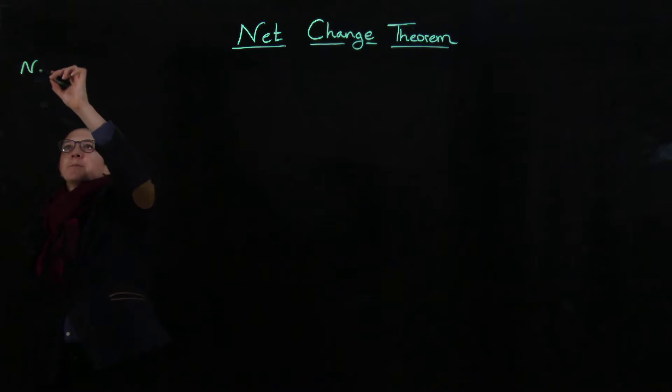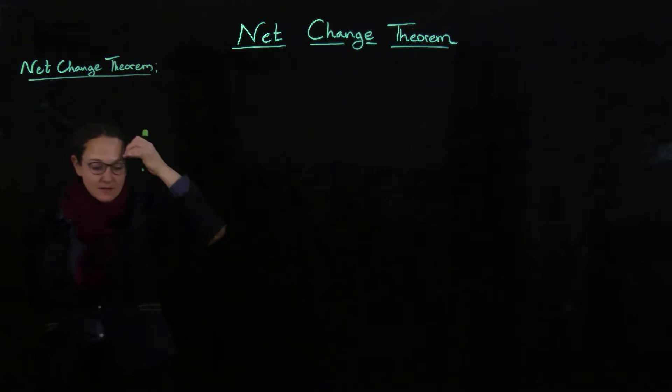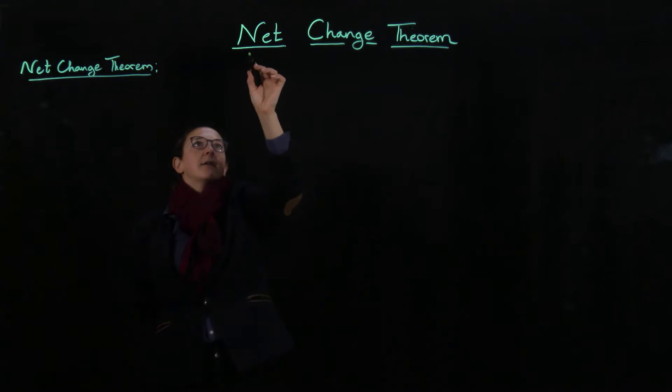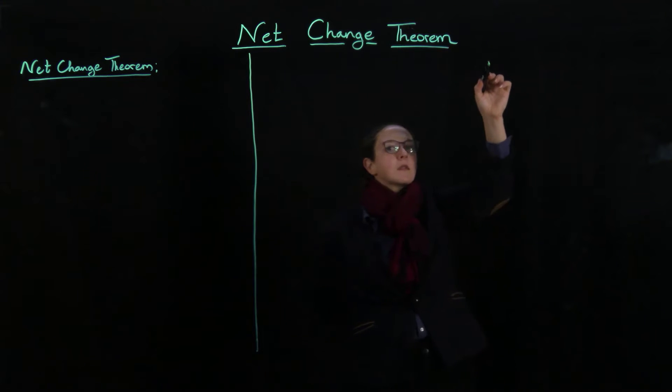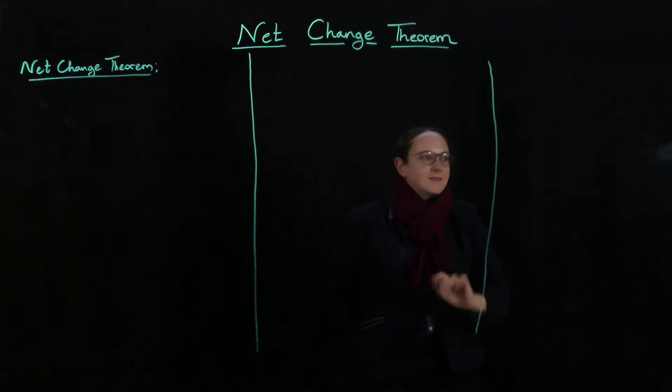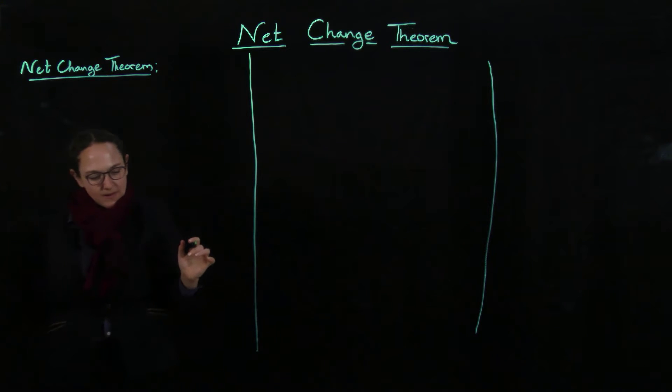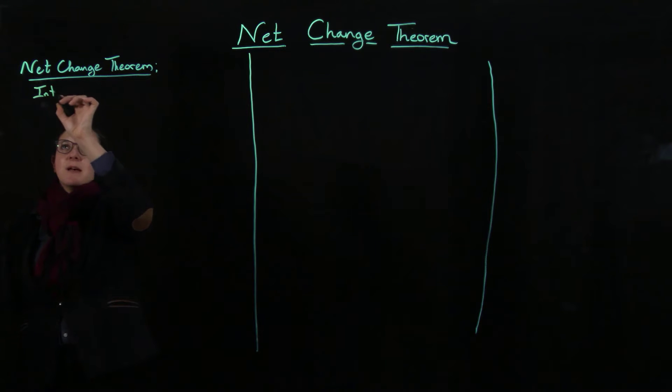So here's the net change theorem. In fact, I think I just want to divide the board in three now. Which is, it's just that the integral of the rate of change is equal to the net change. And I'll explain what I mean by that.